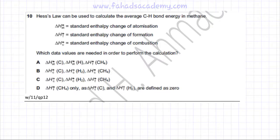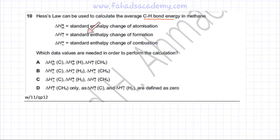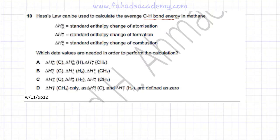This chemical energetics question is about drawing a Hess cycle to calculate the average CH bond energy in methane. The enthalpy of atomization is the standard enthalpy change when one mole of gaseous atoms are formed from constituent elements in the standard state. Enthalpy of formation is the energy released or absorbed when one mole of a substance is formed from its constituent elements in standard states. Enthalpy of combustion is the energy released when one mole of a substance burns in excess oxygen, with all reactants and products in standard states.